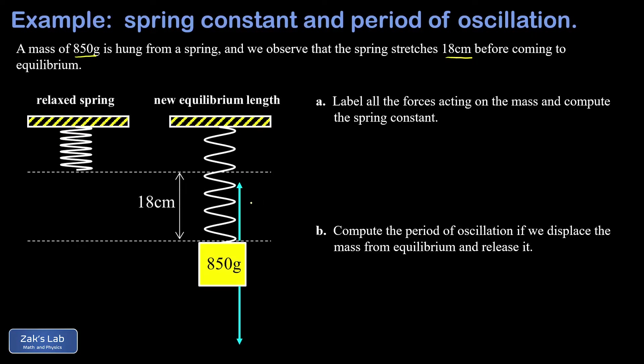So our upward pointing spring force has a magnitude of kx, where x is the displacement from the original length of the spring, and our downward force is mg, the weight of that block.